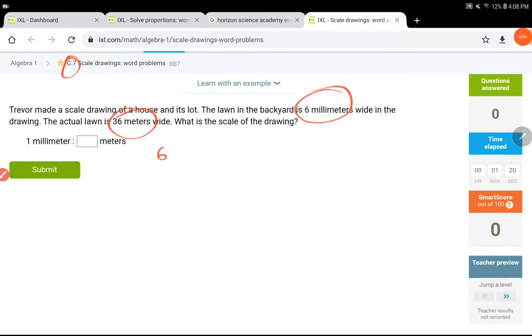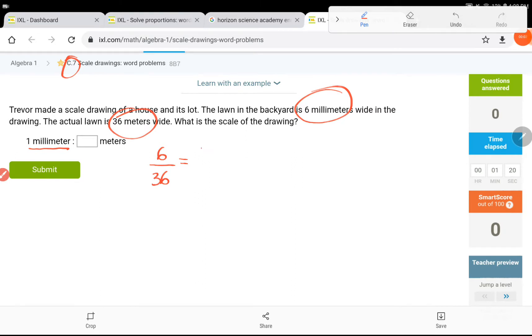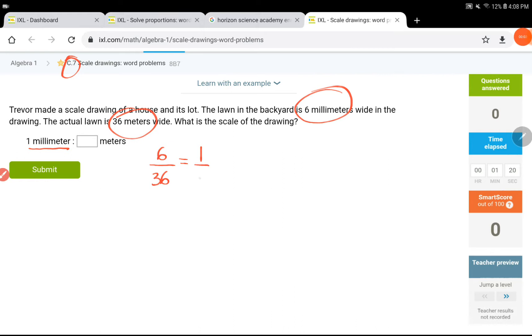So, 6 millimeters to 36 meters is what we have. We are going to try to figure out how many meters is 1 millimeter. So, 1 millimeter, the millimeters goes at the top, divided by the X number of meters.